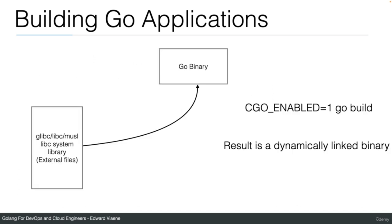When CGO is enabled (CGO_ENABLED=1), which is the default so you don't need to supply it, the result is a dynamically linked binary. Your Go binary will be linked to the libc system library — this can be glibc, libc, or musl, which is used by Alpine. This is an external file on the system, not included in your binary. If you run your Go binary on another system without these files, your program will fail with an error that it cannot find the C library.